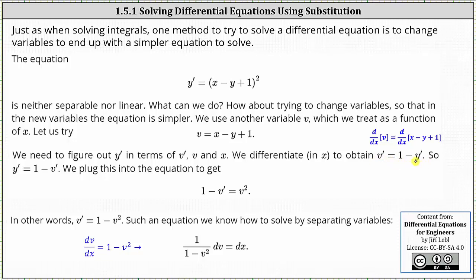Solving for y prime, we have y prime equals one minus v prime. Now we perform substitution: we substitute one minus v prime for y prime and v for the quantity x minus y plus one. This gives us the differential equation one minus v prime equals v squared. Solving for v prime, we have v prime equals one minus v squared, which we should recognize as a separable differential equation.